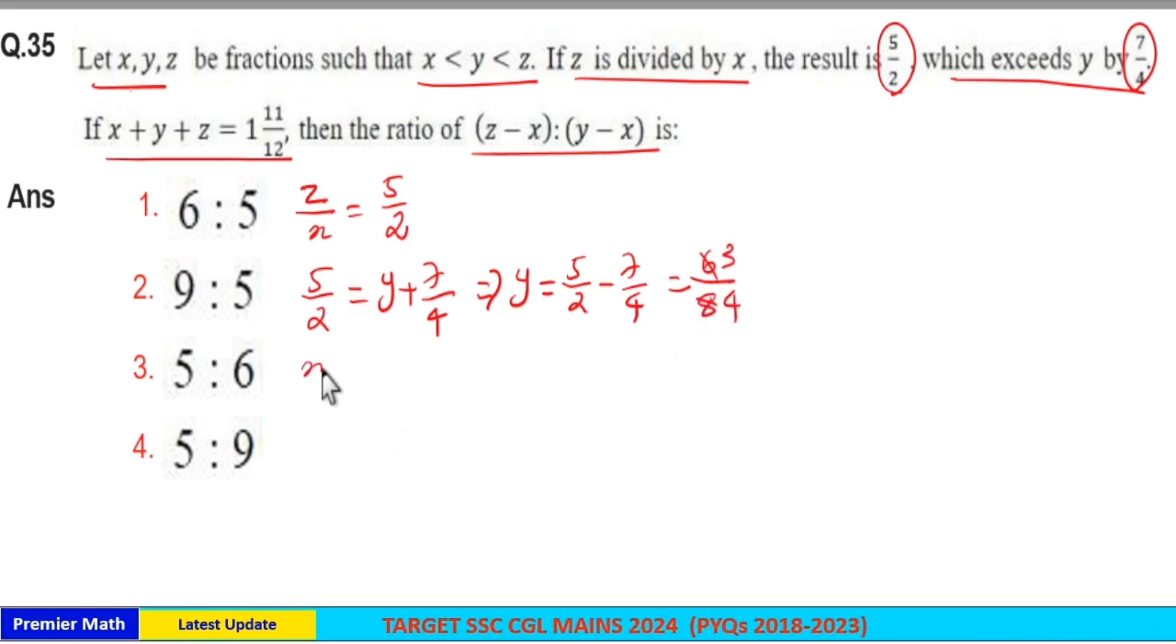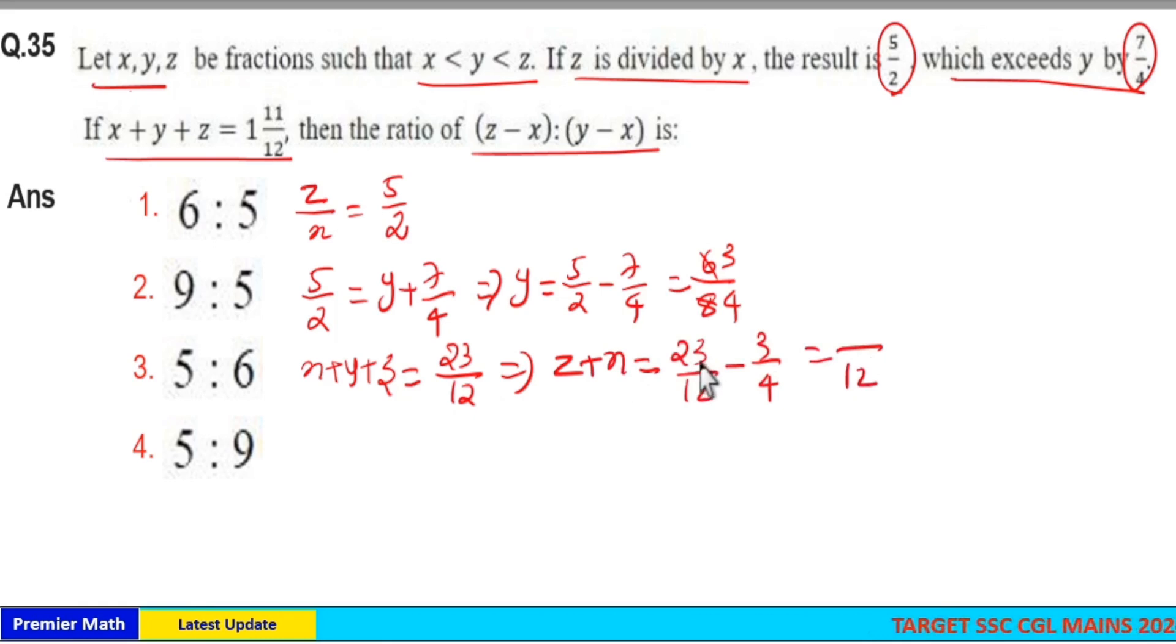So y = 3/4. Since x + y + z = 1 and 11/12, that's 23/12. From this I can find z + x = 23/12 - y. Taking 12 as common denominator, 4 goes 3 times, 3 × 3 = 9. 23 - 9 is 14, so 14/12 = 7/6. Therefore z + x = 7/6.